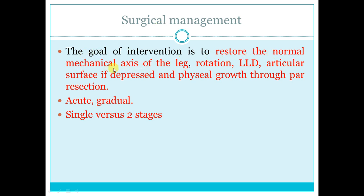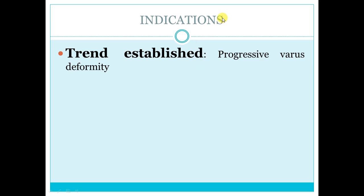Surgical management goal: restore normal mechanical axis. If shifted inward in varus, you have to bring it to the center. In surgical management, if there is internal tibial rotation you have to correct it; if there is limb-length discrepancy, correct it; if there is articular surface depression, elevate it; if there is a physeal bar, resect it. This can be done either acutely or gradually, in single or two stages.